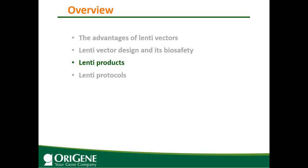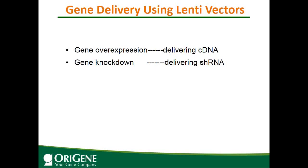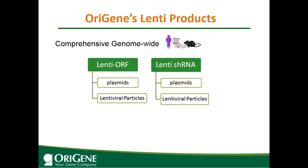Now that I've shown lentiviral vector is a great gene delivery tool and safe to use, what does OriGene offer to serve your lentiviral needs? There are two types of gene delivery: overexpression to deliver a cDNA clone into cells, and gene knockdown where you deliver an shRNA into cells. OriGene offers both products — lentiviral ORF and lentiviral shRNA — comprehensively, genome-wide, for human, mouse, and rat.